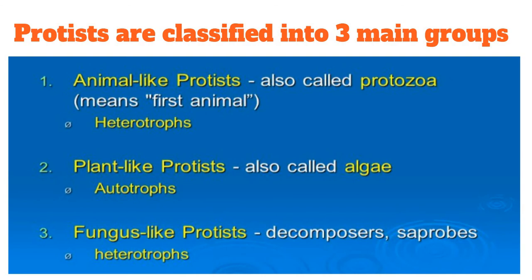Protista members are considered the connecting link between animals, plants, and fungi. Based on that, they are divided into three main groups. There are some Protista members which show animal-like properties, and they are called animal-like protists, also called protozoa.